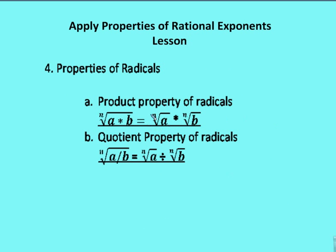Let's talk about properties of radicals. The nth root of A times B equals the nth root of A times the nth root of B. For example, the square root of 81 is the same as the square root of 9 times the square root of 9. You can separate out the factors and simplify them. The index remains the same — when multiplying radicals together, the index has to be the same.